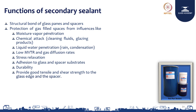Let us look at the function of secondary silicon. It provides a structural bond between the glass pane and spacer, and provides structural benefit towards the glass pane. It also provides protection of the gas-filled space from moisture vapor penetration, chemical attack such as cleaning fluids and glazing products, and liquid water penetration from rain and condensation. It has low moisture vapor transmission and gas diffusion rates, strong adhesion to the glass and spacer substrate, long durability, and provides good tensile and shear strength to the glass edge and spacer.